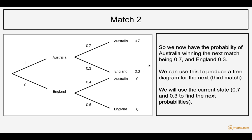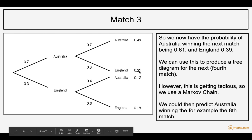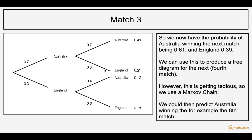This helps us build up the third match tree diagram. The probability that Australia won was 0.7 and England 0.3. Because Australia won, they have a 0.7 chance of winning and a 0.3 chance of losing. We add the two Australia-win branches together to get 0.61. The chance of England winning gives us 0.21 and 0.18, obtained by multiplying those two probabilities.